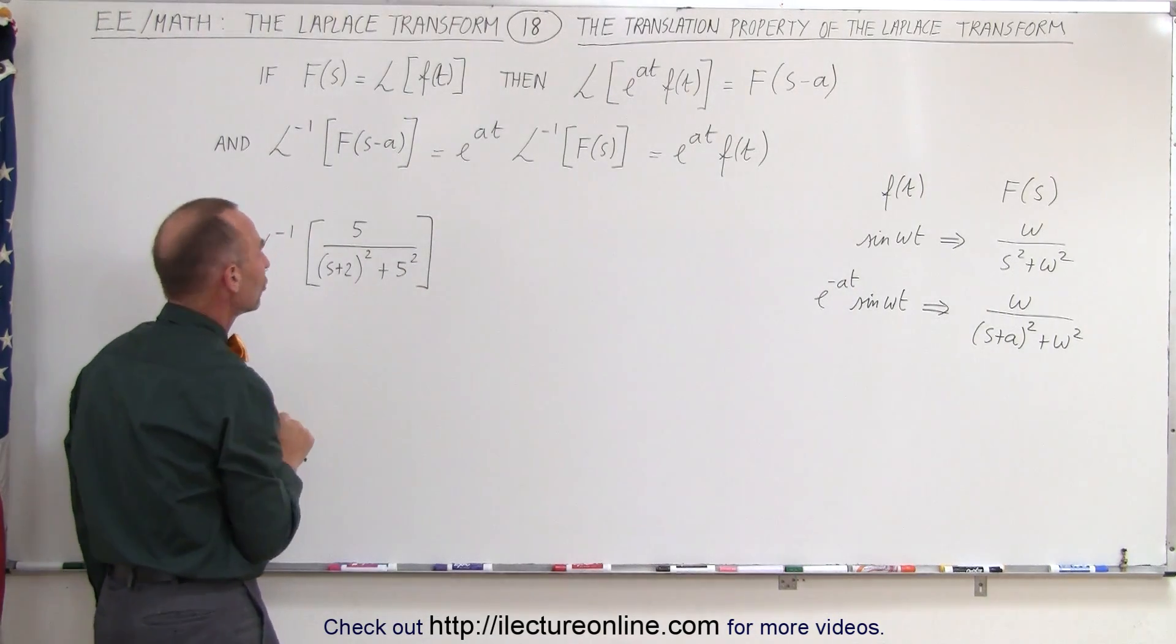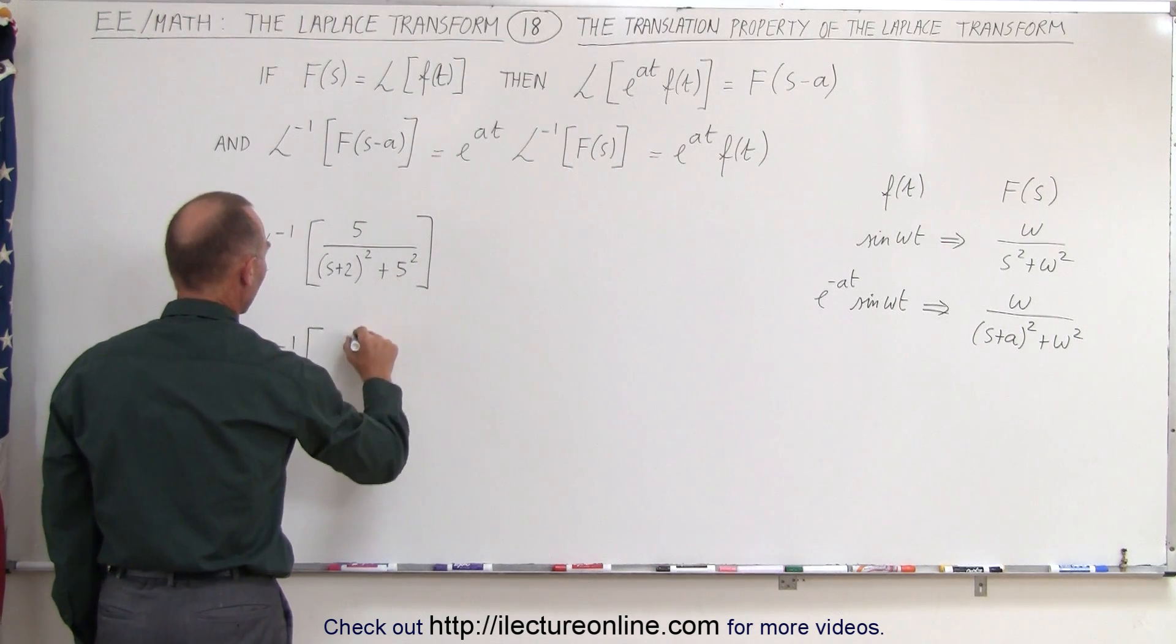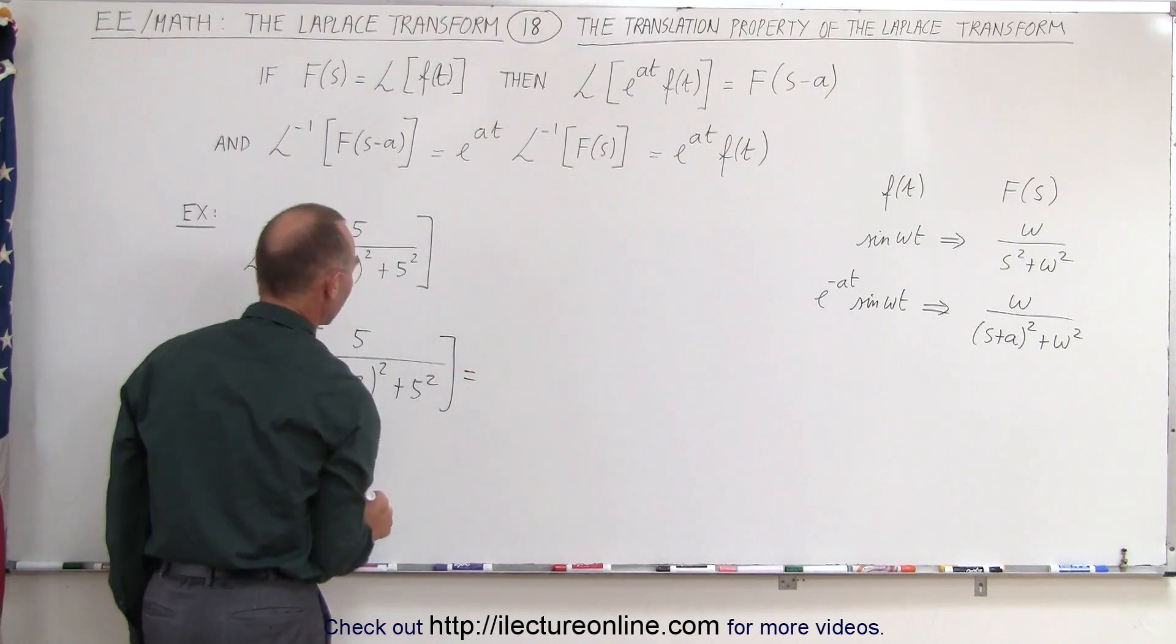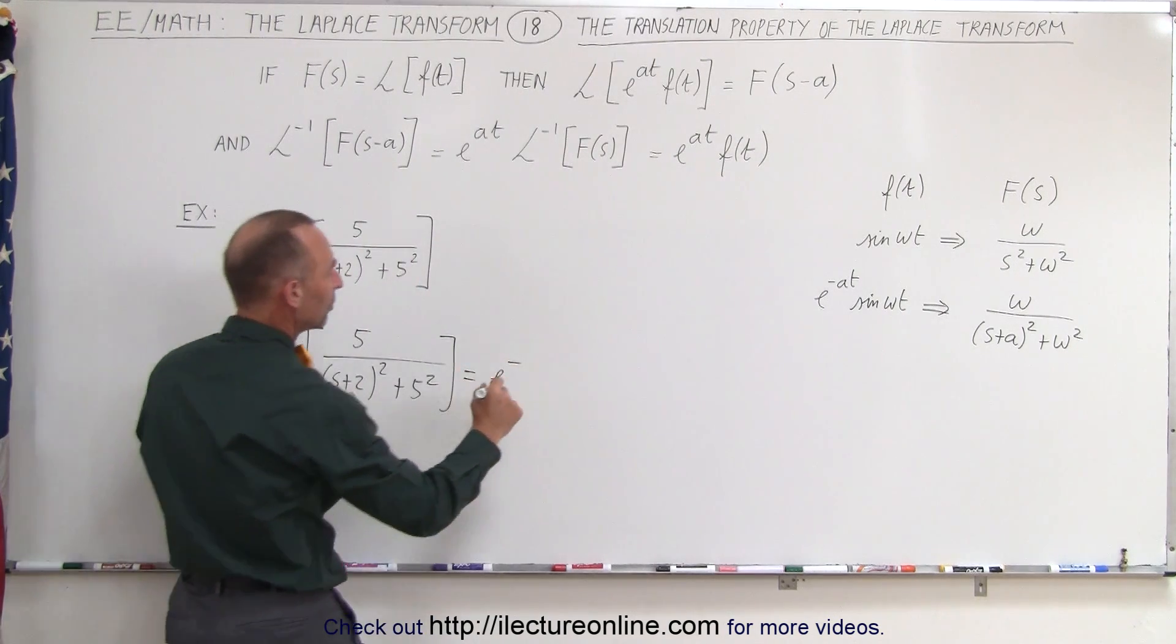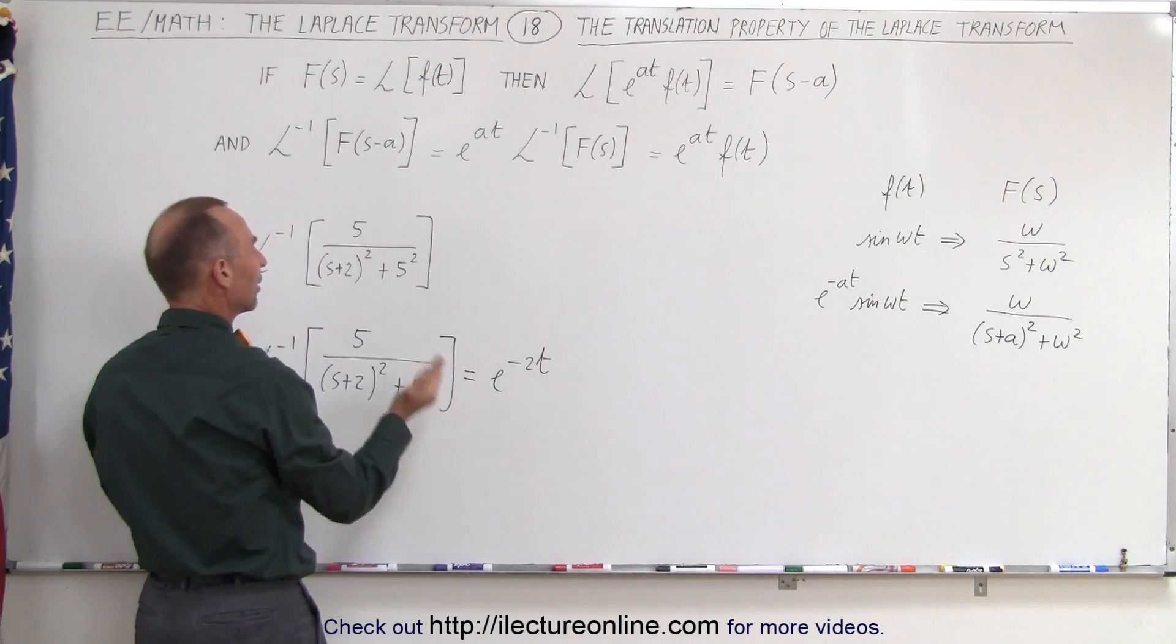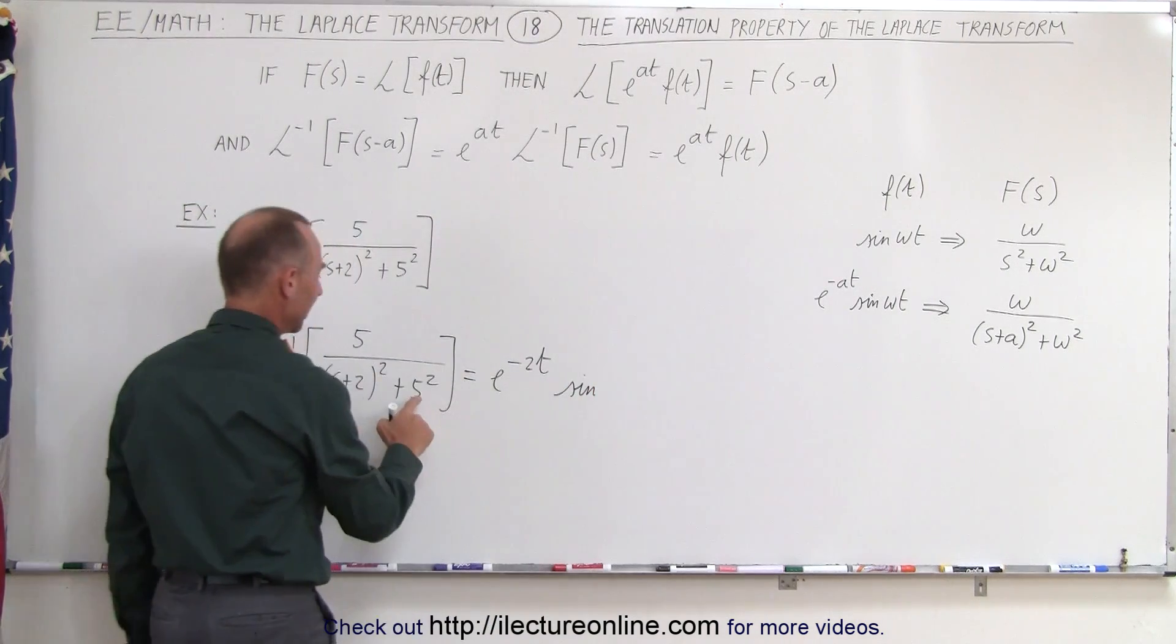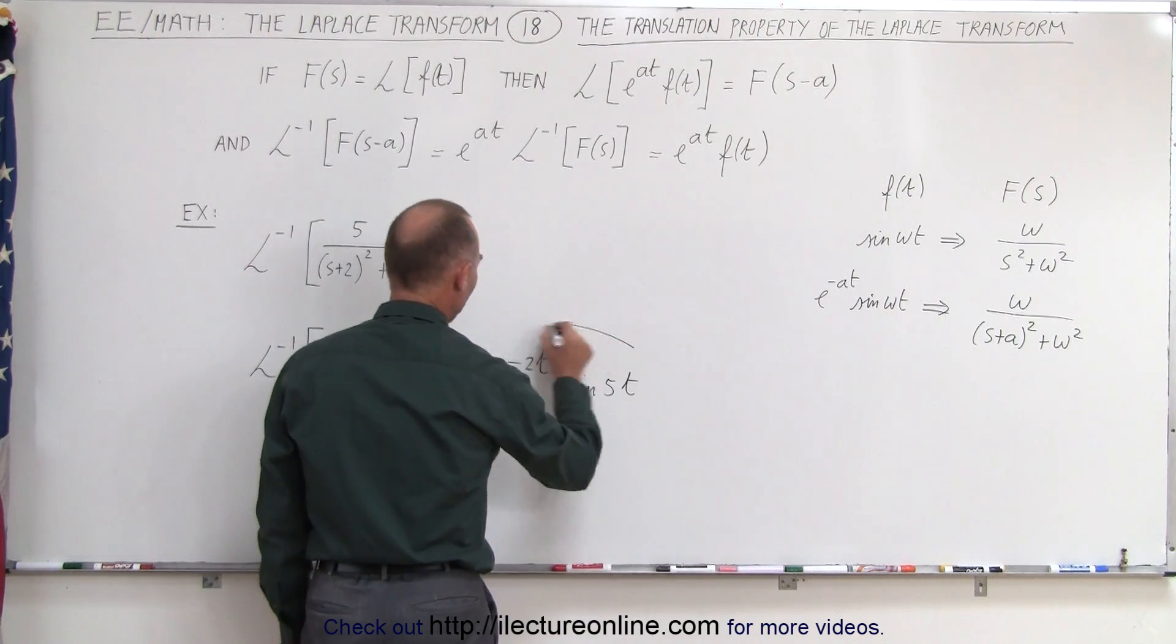which means then that the inverse Laplace transform of 5 divided by s plus 2 quantity squared plus 5 squared can then be written as e to the minus, this is your a here, that would be minus 2t, multiplied times the inverse Laplace transform if you didn't have a plus 2 here, and that would then be the sine of omega t. In this case omega is 5, so we write the sine of 5t.